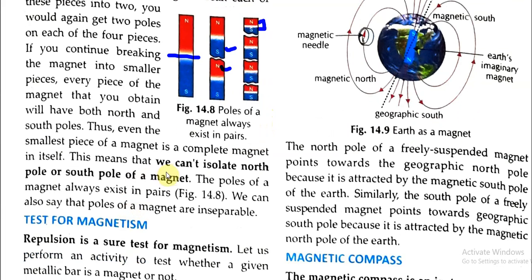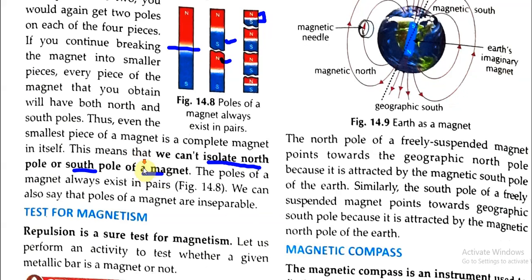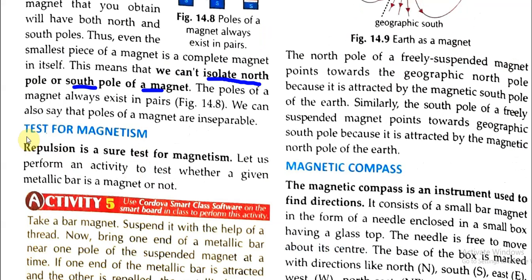This means that we can't isolate the North Pole or South Pole of a magnet. Next we will see the test for magnetism — repulsion is a sure test for magnetism.